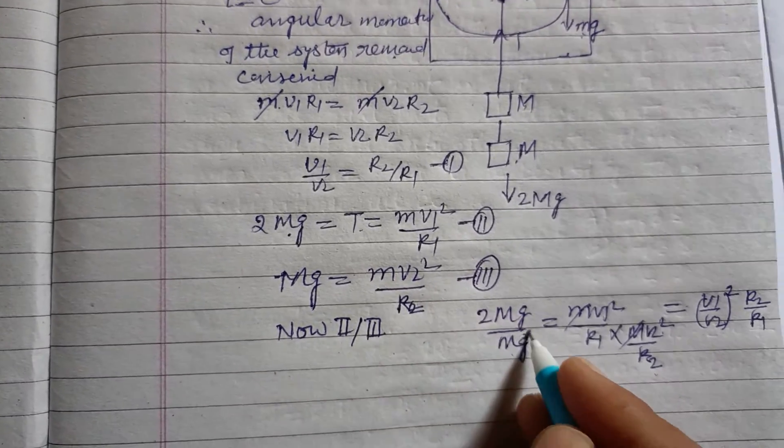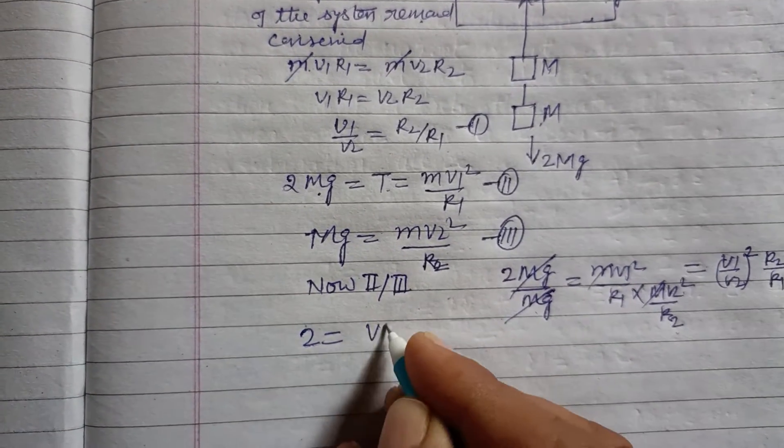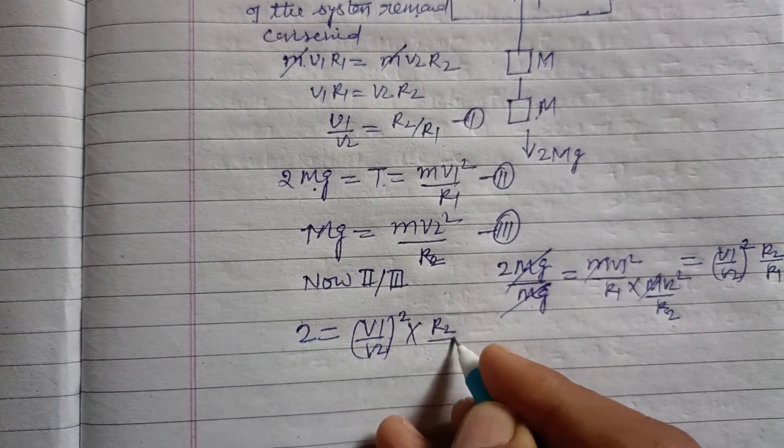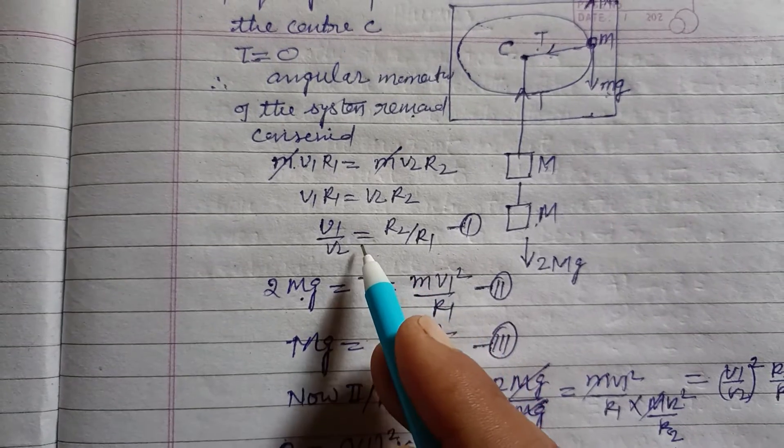So here Mg cancels, we got 2 equals V1 upon V2 whole squared, R2 upon R1.